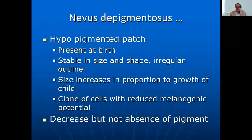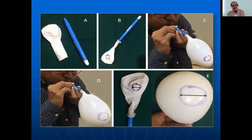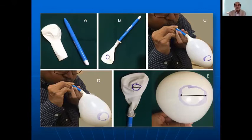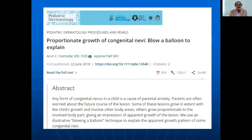There is a decrease but not absence of pigment in nevus depigmentosus. To convince parents it is proportional growth, I take a small used pen, put a balloon on it, mark the nevus on the balloon, and blow it — the balloon grows but the nevus just stretches proportionally. This simple innovation was published in the international journal Pediatric Dermatology.